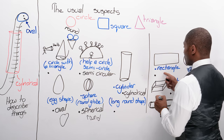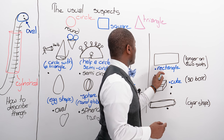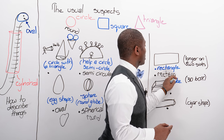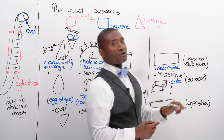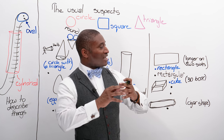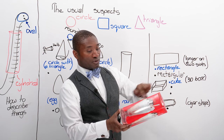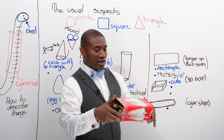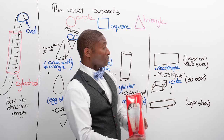So rectangle — let me step over here so you can read it — rectangular. It's an object that has two sides that are longer than the other two sides, but for it to be rectangular it also has other dimensions.